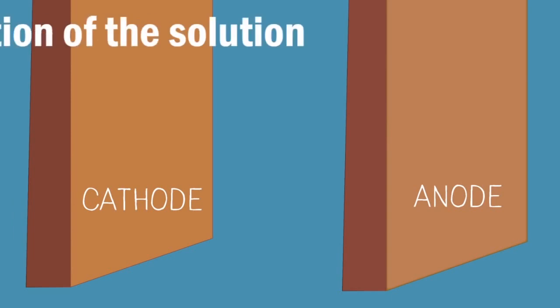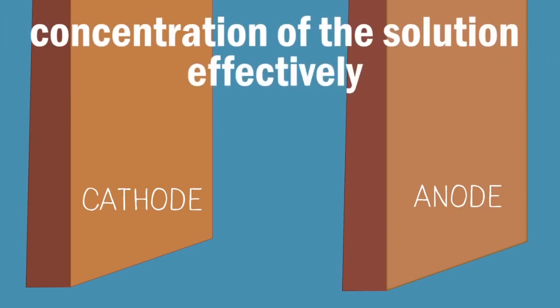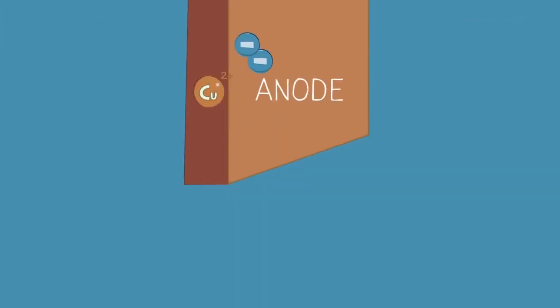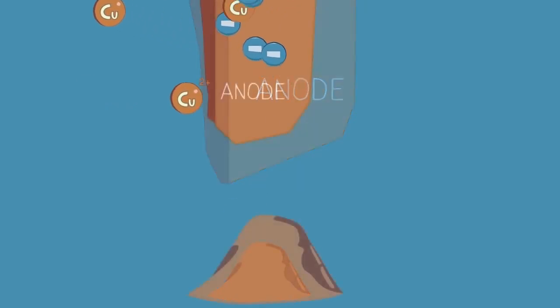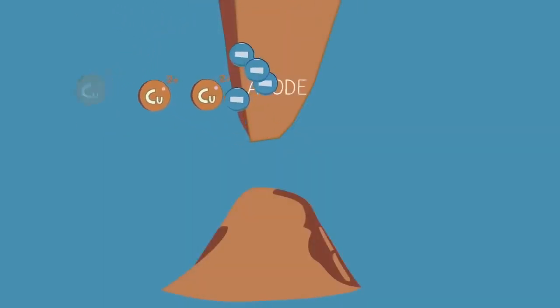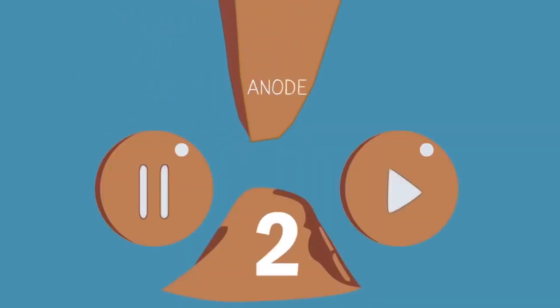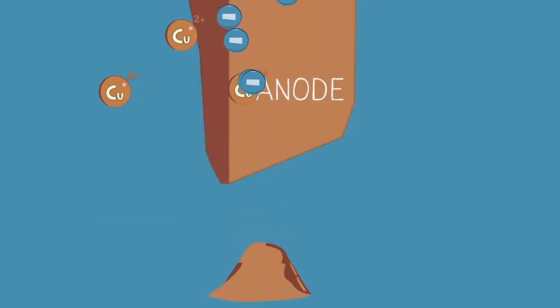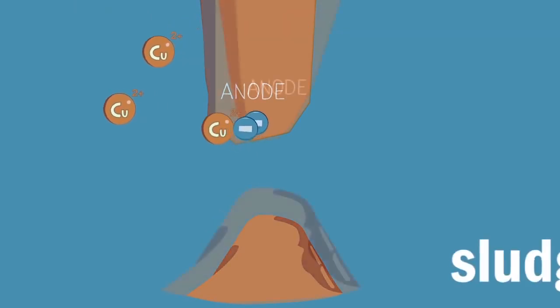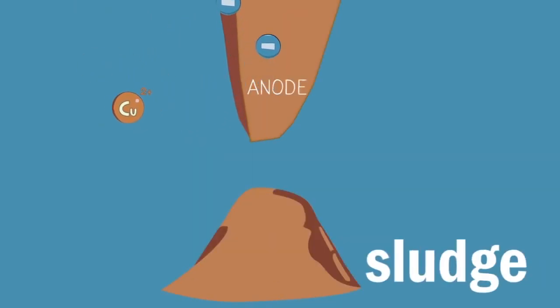What do you notice happens to the anode? Pause the video and continue when you're ready. You should have noticed that the anode gradually disappears and sludge is left at the bottom of the reaction vessel.